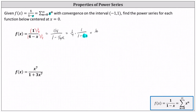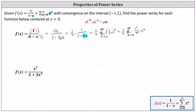This gives us one-fourth times the sum from n equals zero to infinity of the nth power of one-fourth x. We can write this as one-fourth times the sum from n equals zero to infinity of one to the power of n divided by four to the power of n times x to the power of n. One to the power of n is always equal to one. If we bring the one-fourth into the power series, we need to multiply four and four to the power of n. Recall when multiplying with the same bases, we add the exponents, so four to the first times four to the power of n equals four to the power of n plus one.